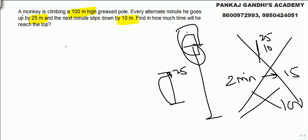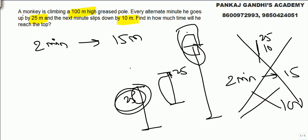For these kind of questions, the cycle is of 2 minutes. In 2 minutes monkey goes up by 15 meters. The height of the pole is 100. At one go monkey can go up by 25. So what we need to do is make the monkey reach 75 meters, next minute it will reach the top.